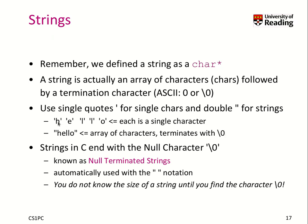If we write H-A-L-L-O, we have 5 characters plus a null termination in a string representation, whereas as individual characters we just have those 5. These are called null-terminated strings, and the null termination is added automatically when you use the double-quote notation. It also means we don't know the size of the string until we look for the backslash-0 character.